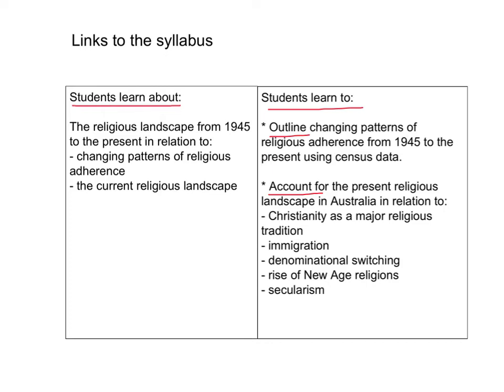In this particular unit you need to learn about the religious landscape from 1945 to the present in relation to the following areas. Firstly, changing patterns of religious adherence — that is, a religion that a person identifies themselves as belonging with. And secondly, the current religious landscape.